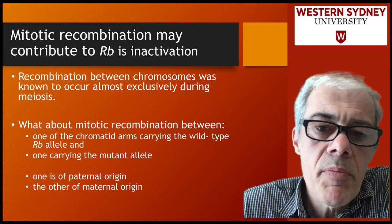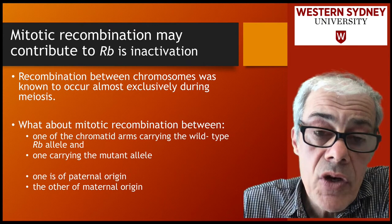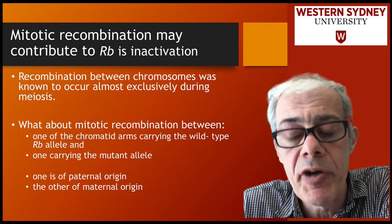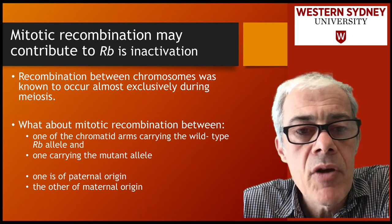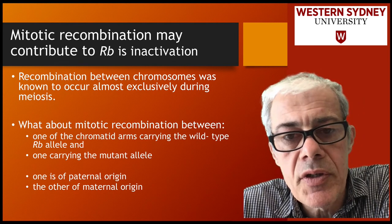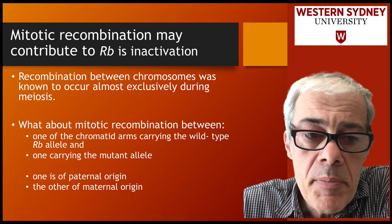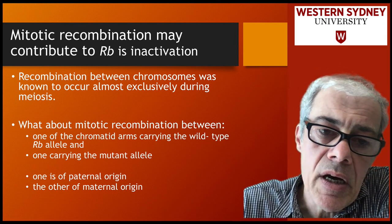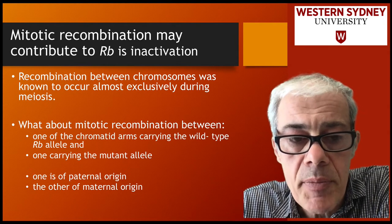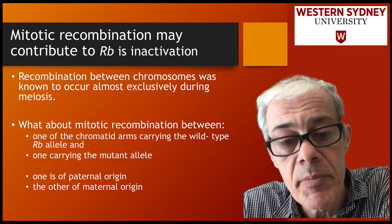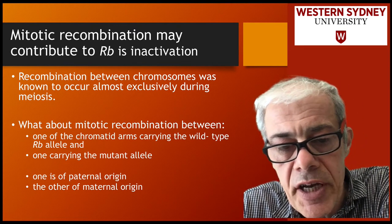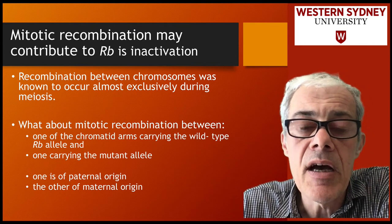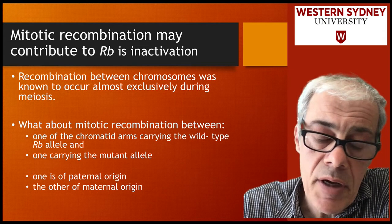It turned out that one of the non-mutational events that can contribute to losing a good copy of the gene is a process called mitotic recombination. Recombination between chromosomes was known to occur during meiosis, but what about mitotic recombination between one of the chromatid arms of the wild-type copy and one of the chromatid arms of the mutant copy? Effectively, you've got a paternal gene and a maternal gene, one of them is mutated.